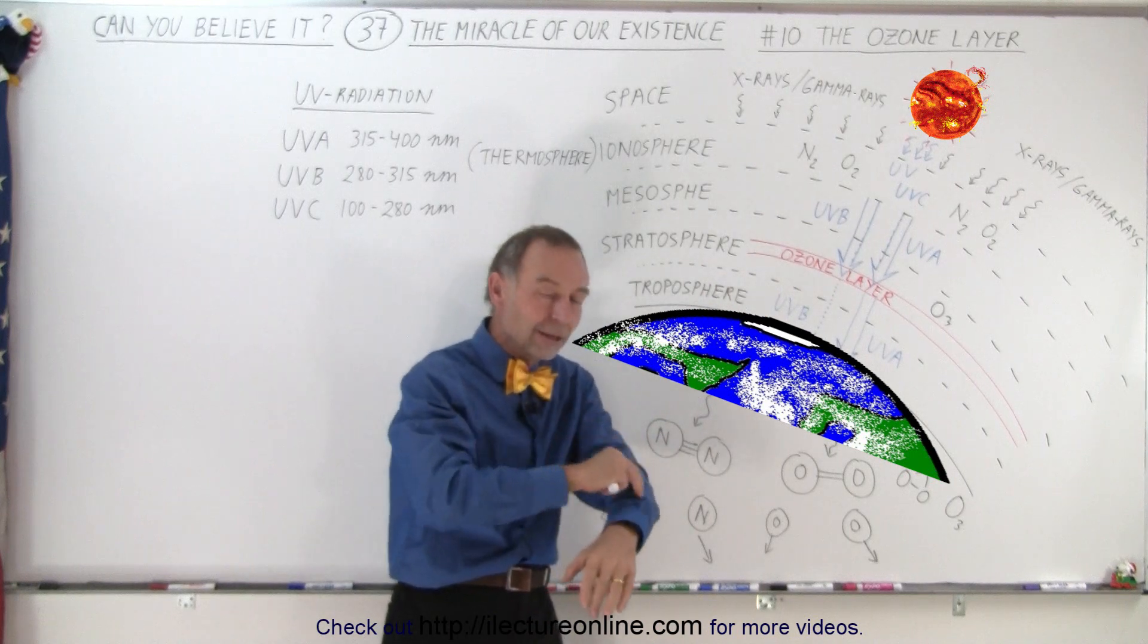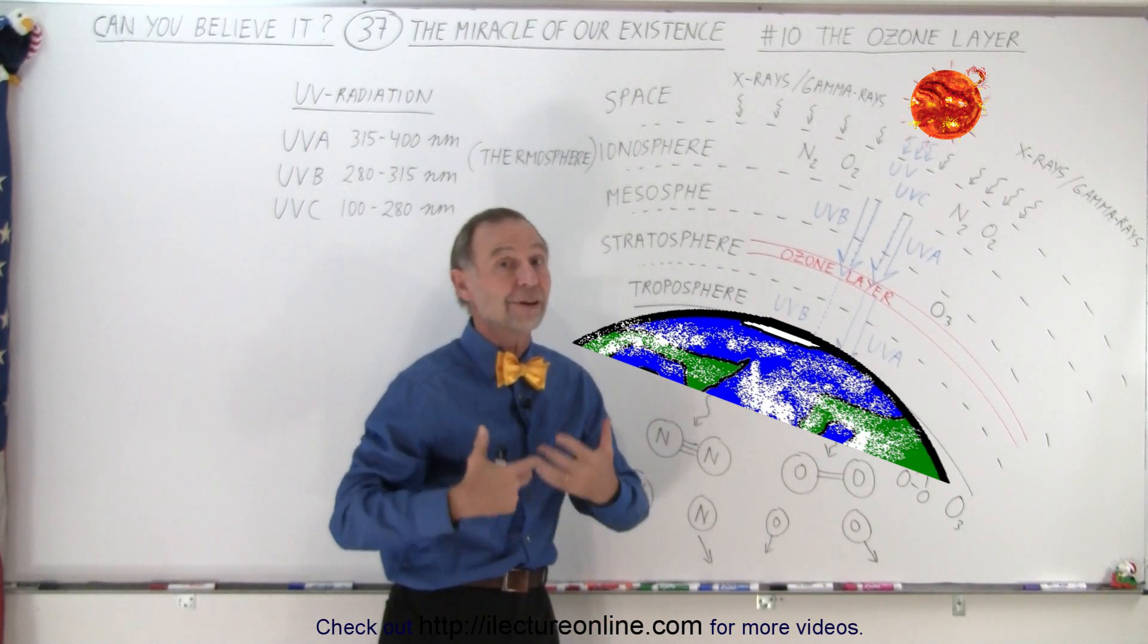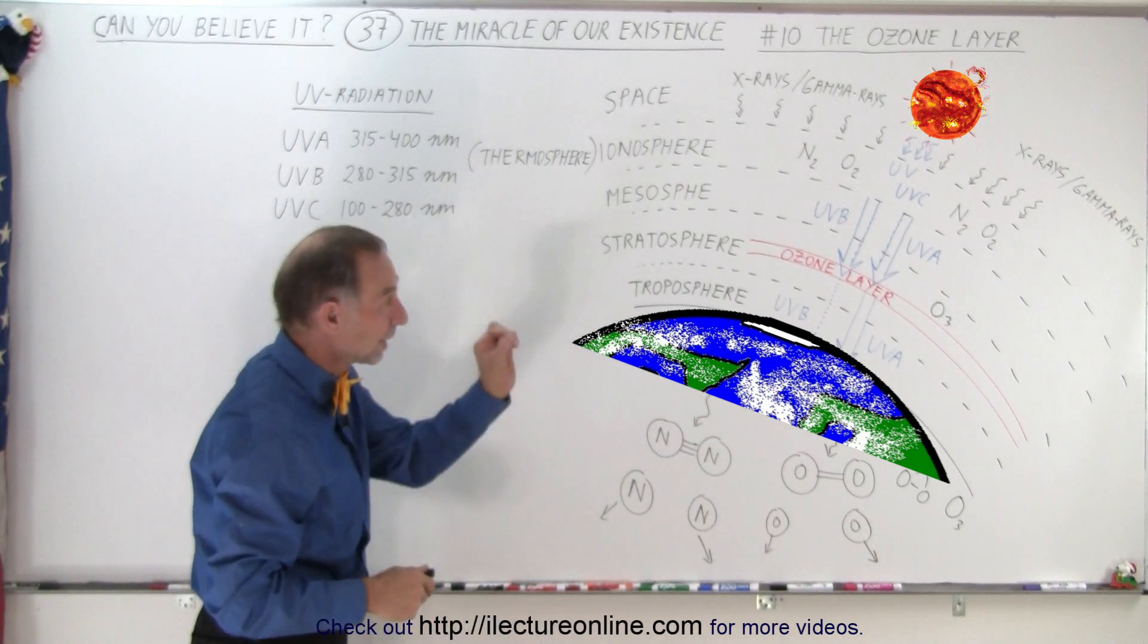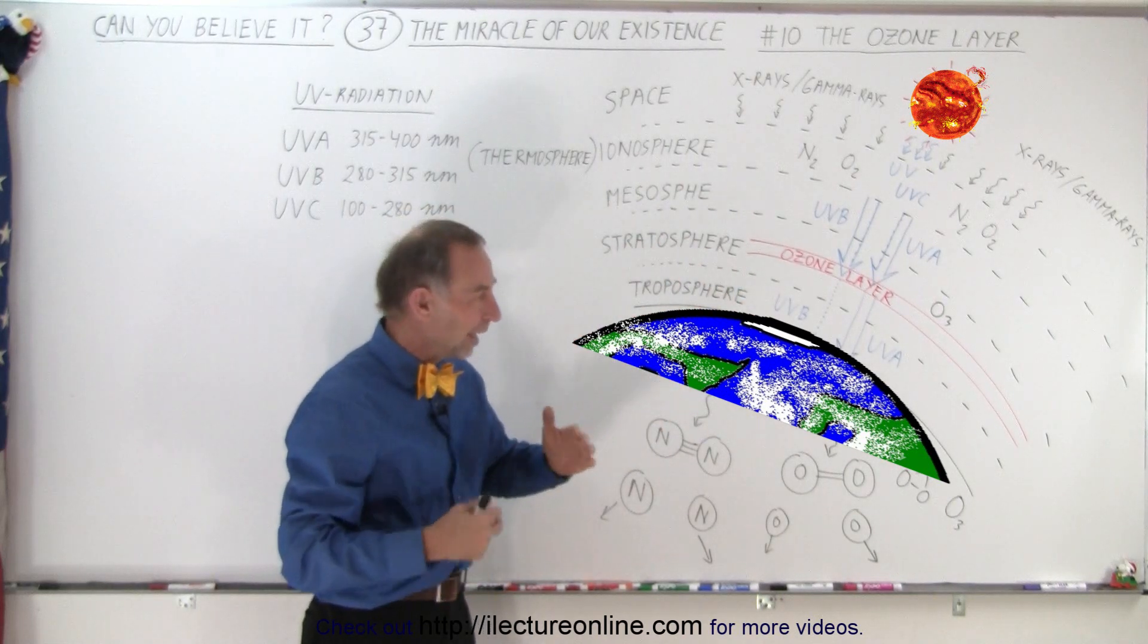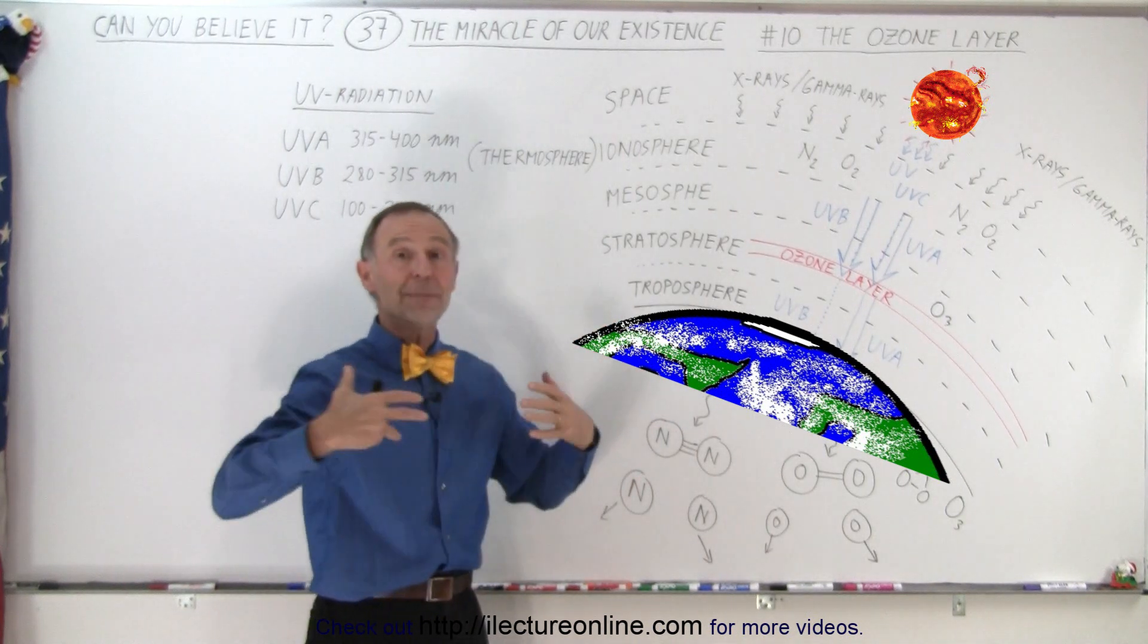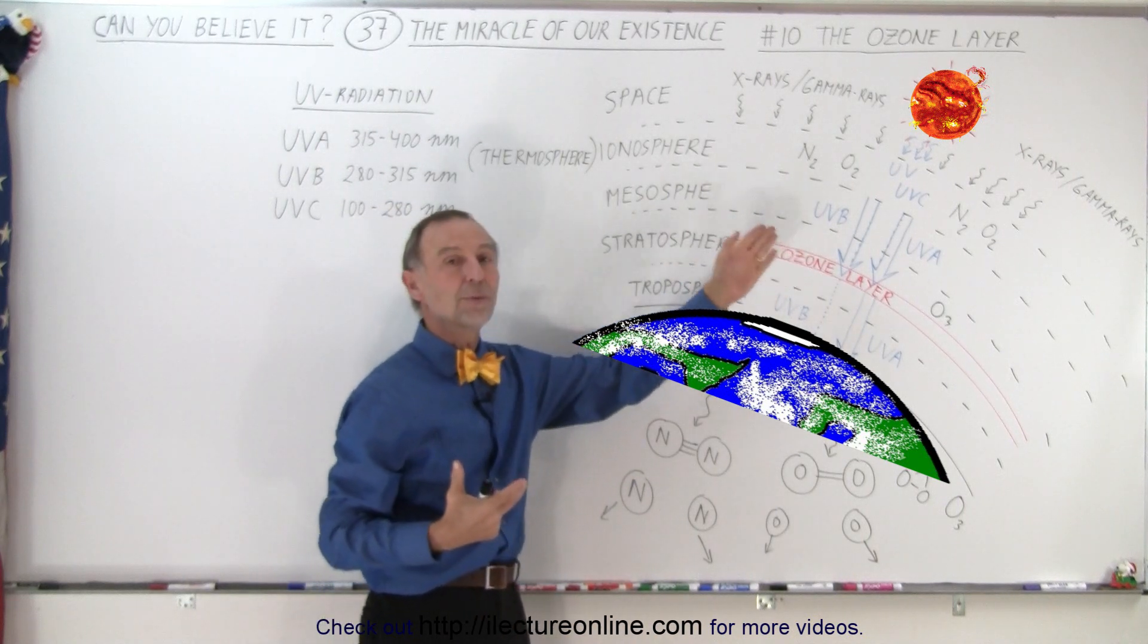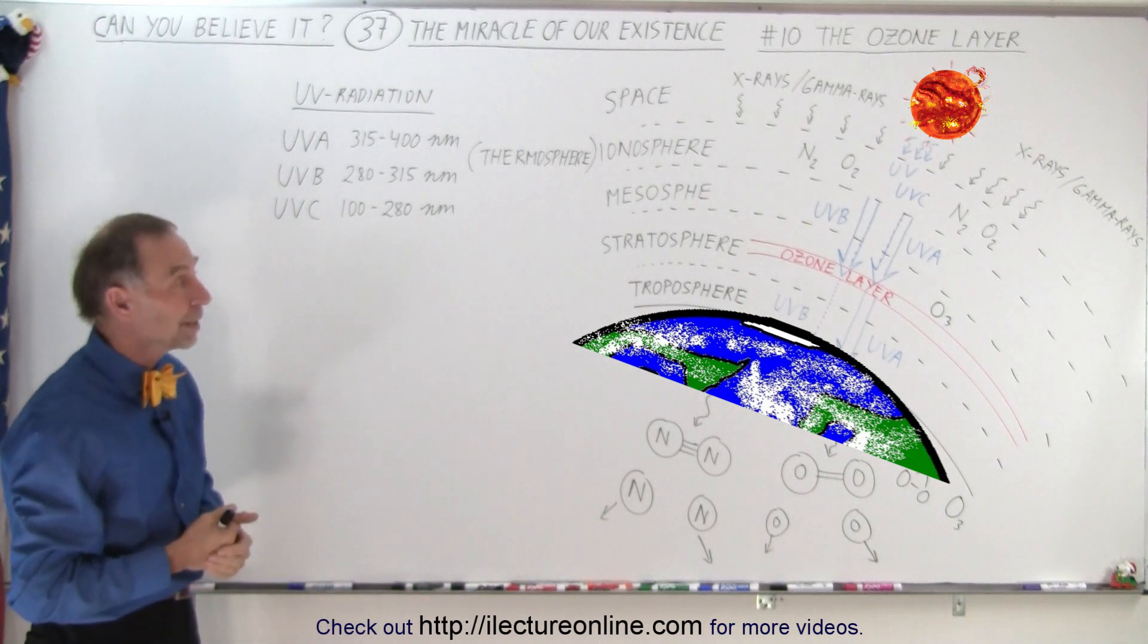UVB needs to be eliminated to a large extent, not completely, because it turns out that UVB radiation is what causes the skin to generate vitamin D, which is very vital for us. A little bit needs to come through, but the vast majority need to be stopped for us to live on this Earth. And the ozone layer does exactly that, allows just enough through so we can be healthy with vitamin D, and not too much so we wouldn't be destroyed by the radiation effects of UVB.